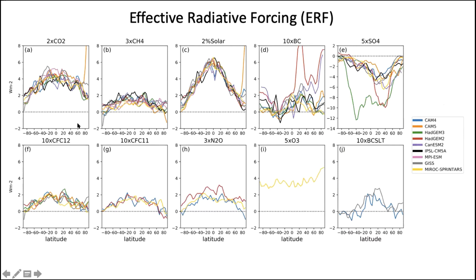A committee member asks for clarification on effective radiative forcing. ERF is the net downward radiative flux at the top of atmosphere in the perturbed atmosphere minus that in the baseline atmosphere — computed before the surface temperature changes. It's similar to the fast adjustment concept for water vapor: the change in TOA flux after you've perturbed the system but before the surface temperature responds.